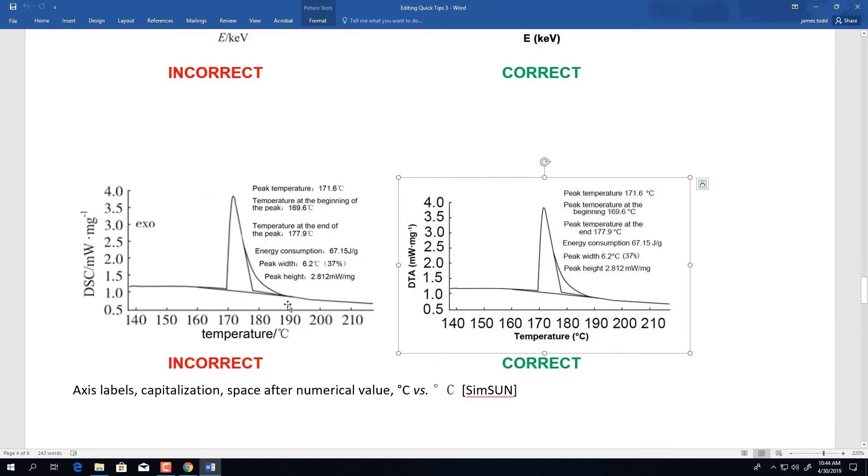On axis labels, please ensure that there is a space between the axis label and the unit of measurement. So here we have the axis label with a space before the unit of measurement in parentheses. And the same goes for the x-axis label in this image.